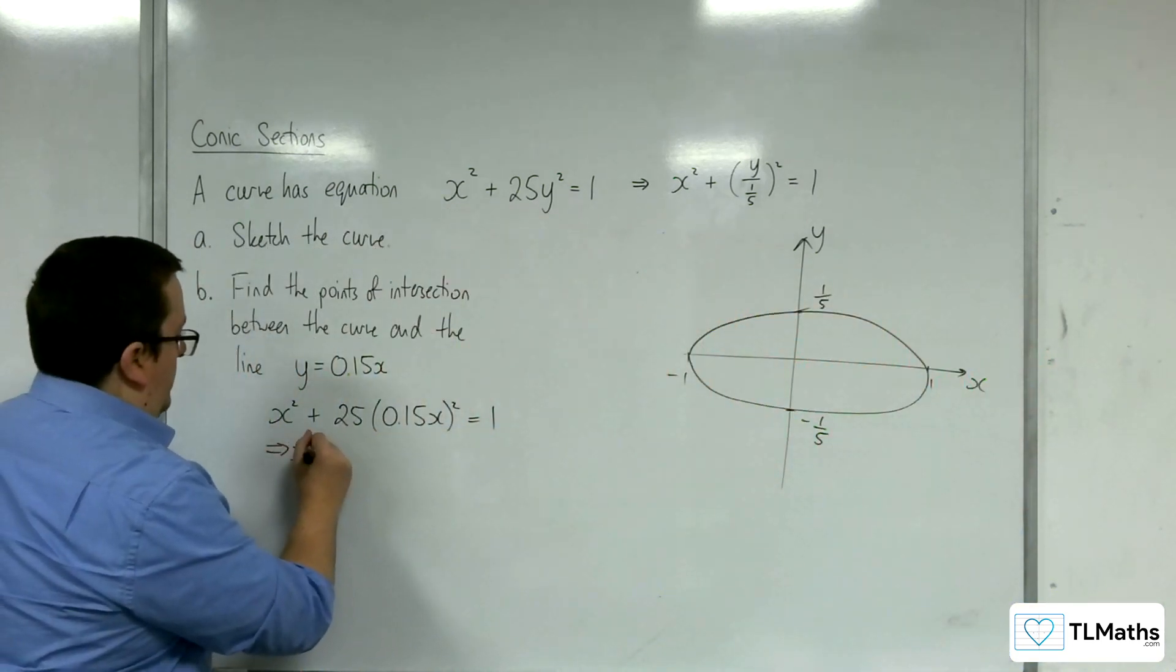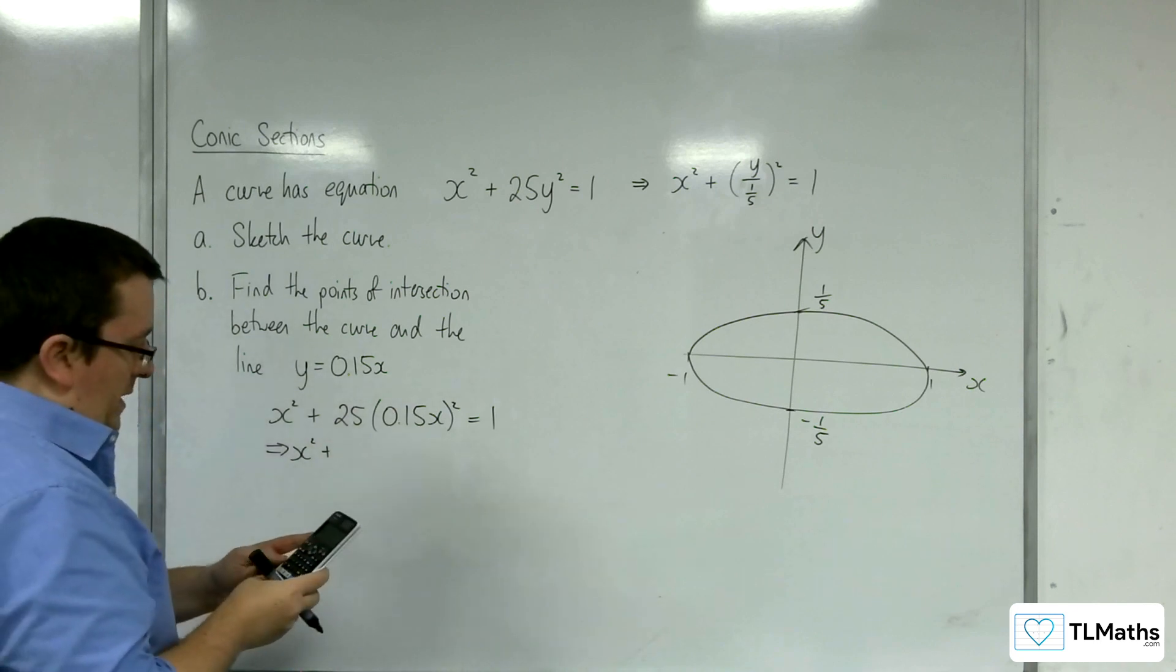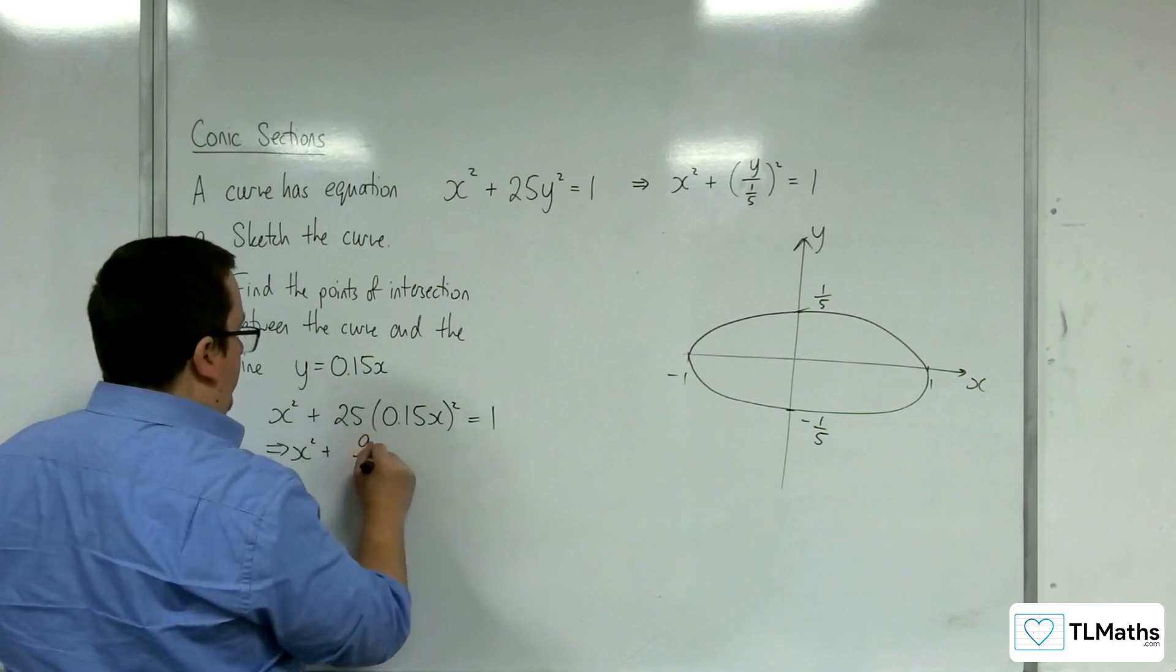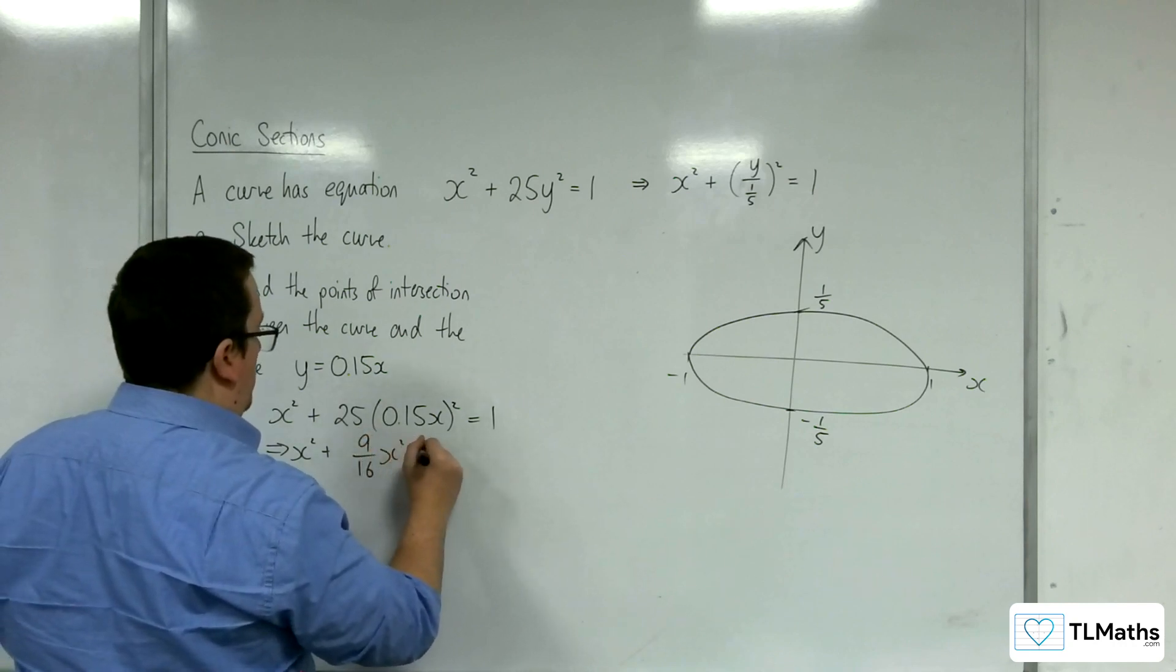So, we've got x squared plus, right, 25 times 0.15 squared is 9 sixteenths. So, 9 sixteenths x squared equals 1.